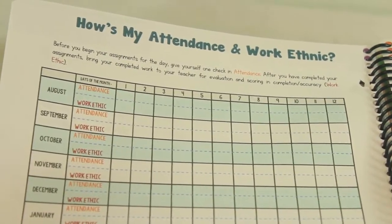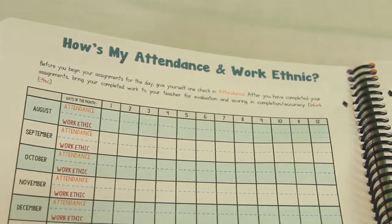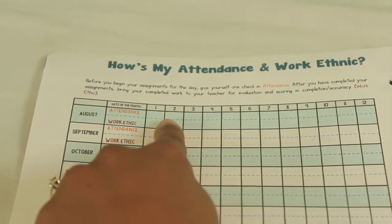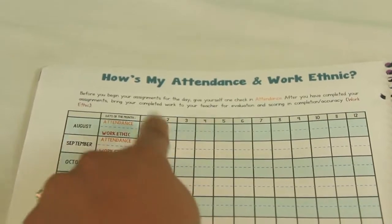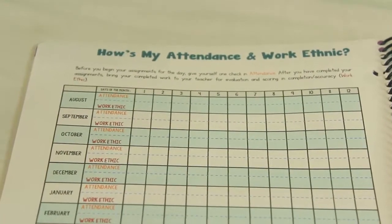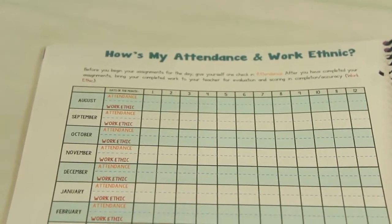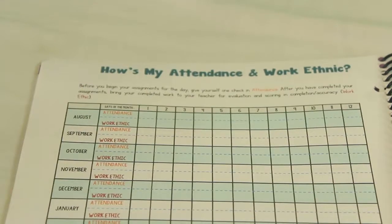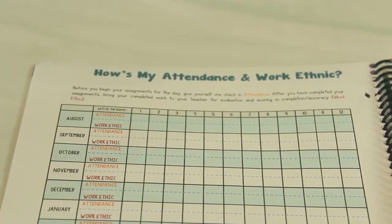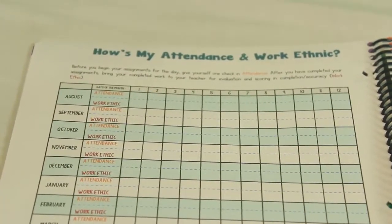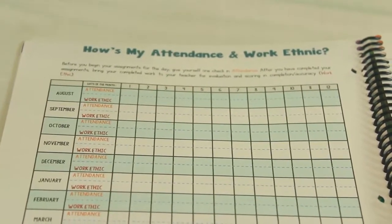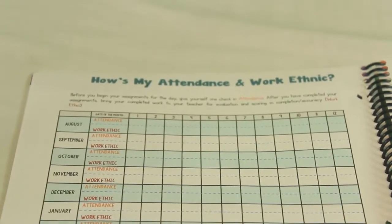After you have completed your assignments, bring your completed work to your teacher - that's me - for evaluation and scoring and completion accuracy work ethic. So let's say that he's going to start school August 1st, just because it's here. He gets up, he has his agenda. His lessons are already in here. He gives himself a check because he's in school for the day. He's present, he's here. And then at the end, I will evaluate his work either for completion or accuracy. Some subjects actually do require scoring. And then I give him the check for work ethic saying I've seen your work and it meets his father and I's quality in order to give him that check in work ethic.